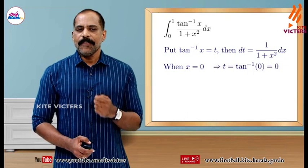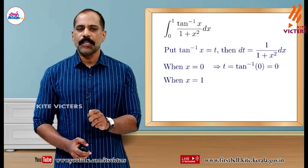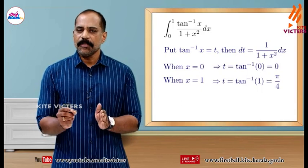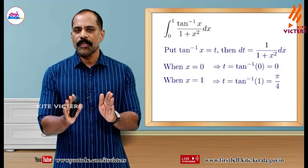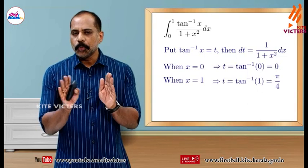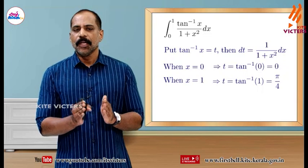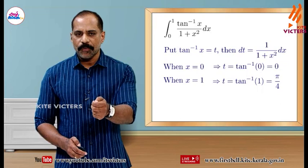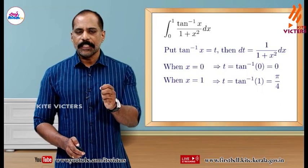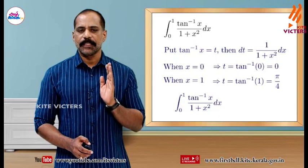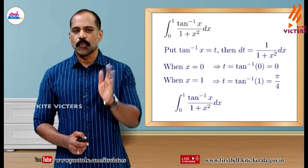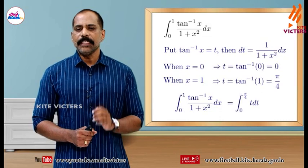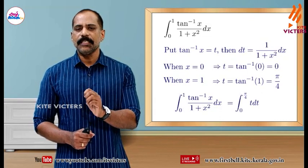When x equals 1, t equals tan inverse 1. Tan inverse 1 is 45 degrees, which is pi by 4. So the upper limit is pi by 4. Therefore the integral from 0 to 1 of tan inverse x by 1 plus x squared dx equals the integral from 0 to pi by 4 of t dt.